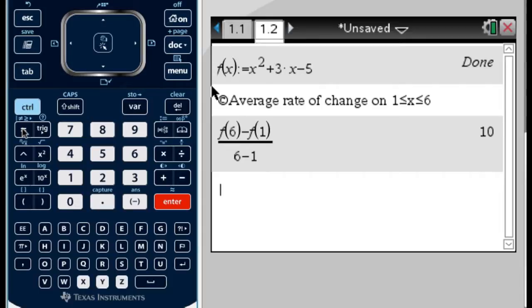So that's the slope of a line that goes through the point where x is 1 and the point where x is 6 on this function. Doing it this way, you never even actually know what the y-coordinates are.